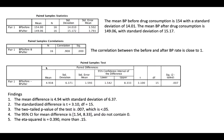The mean BP before drug consumption is 154 and mean BP after is 149, with standard deviations of 14.01 and 15.17. Be consistent when reporting — if you report the mean with two decimal points, report standard deviations also with two decimal points. The correlation between before and after is close to 1, so they are closely related.